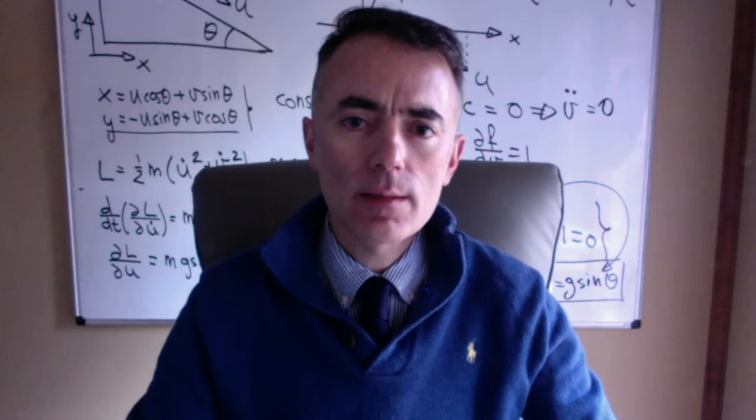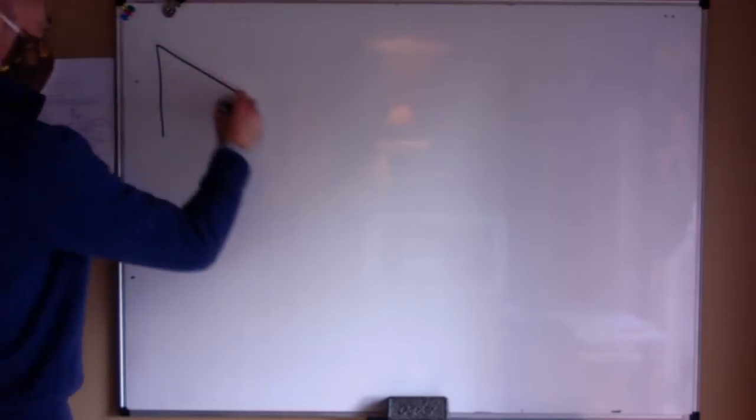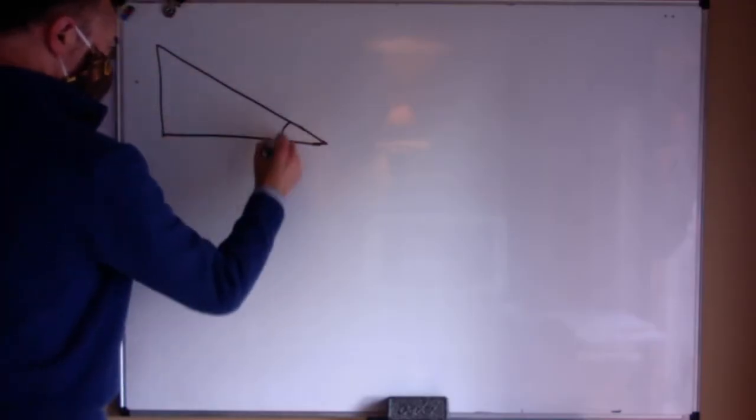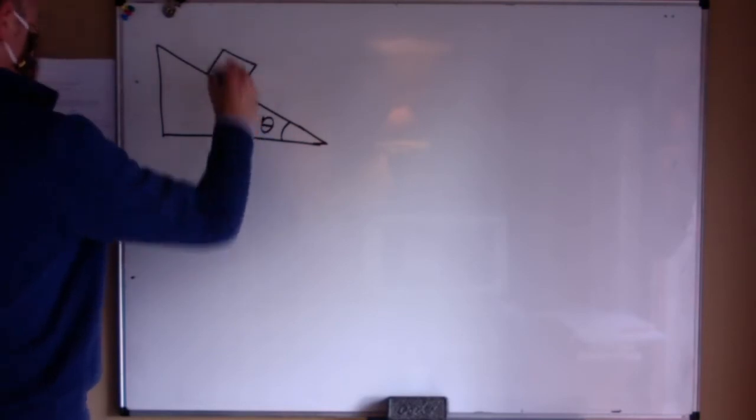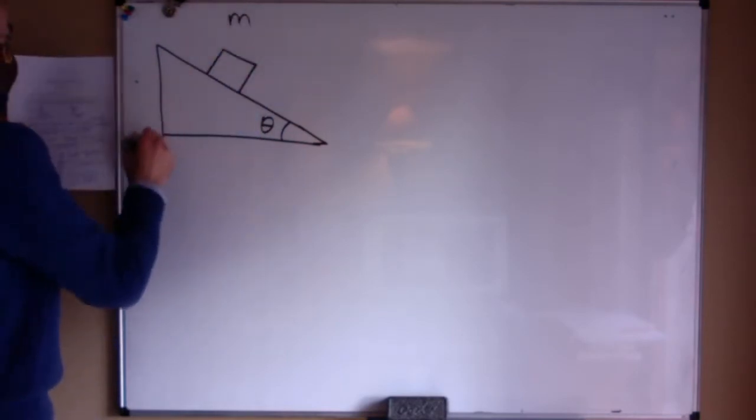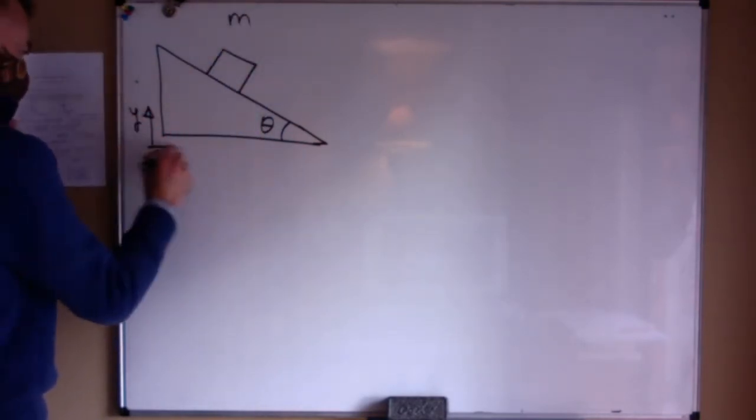Consider a block that slides down an incline. The block has mass m and there is no friction. I want to use this new method to show that the normal force is the expected mg cosine of theta.